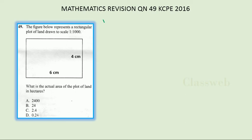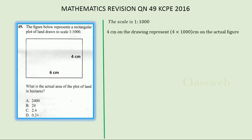The length was measured with the same ruler and found to be about six centimeters. According to the scale, every single unit on the paper represents one thousand units on the actual figure — meaning the actual plot of land. Because the width is four centimeters, those four centimeters must be multiplied by one thousand.